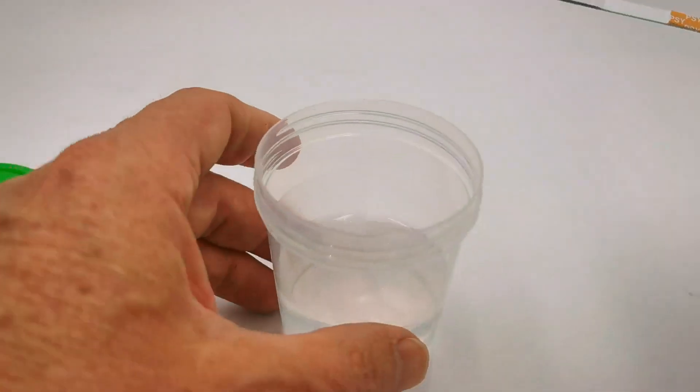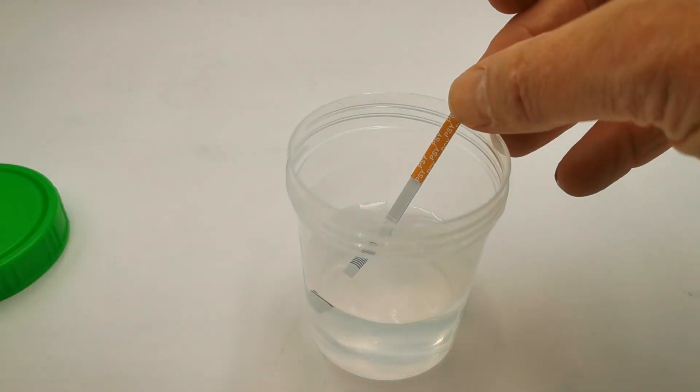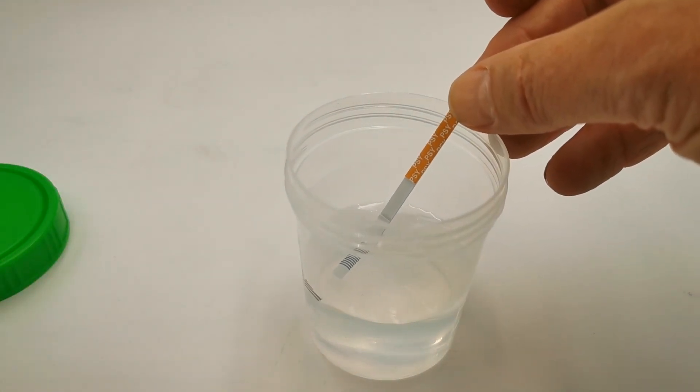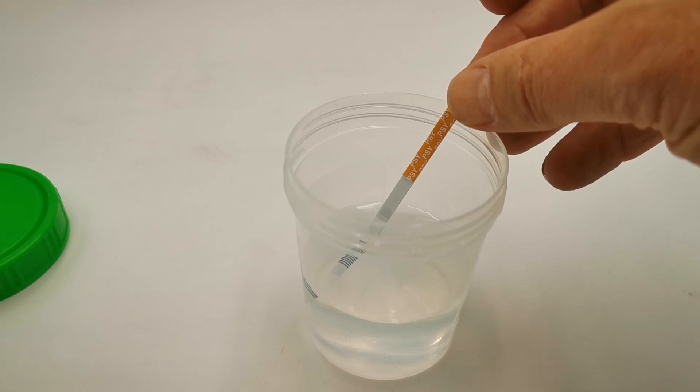Take your fresh urine sample and dip the test strip to the top of the wavy lines, holding it in the sample for around 5 to 10 seconds.